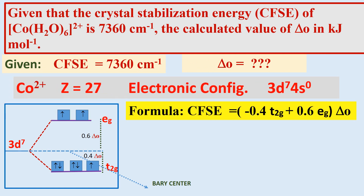The formula used to calculate the crystal field stabilization energy is: CFSE = [(-0.4 × number of T2g electrons) + (0.6 × number of Eg electrons)] × Δ₀.